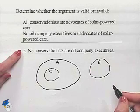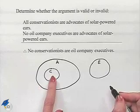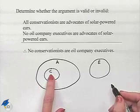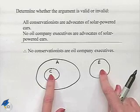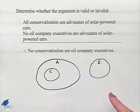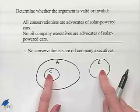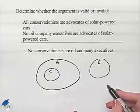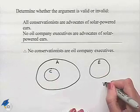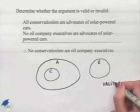No conservationists are oil company executives. Here's the set for conservationists, here's our oil company executives, and we can conclude that we will not be able to have any kind of overlap here. Therefore, our argument is valid.